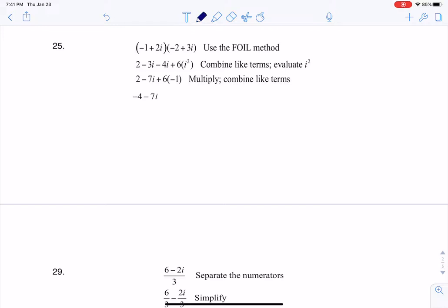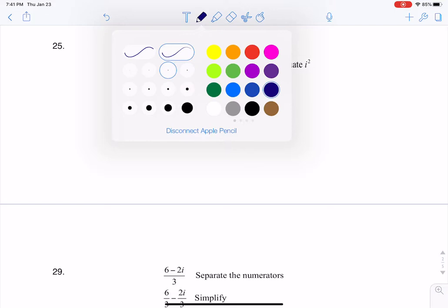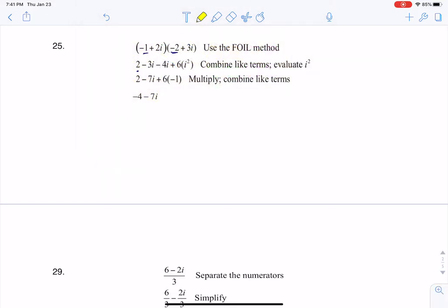All right, so if I want to do first, it's going to be negative 1 times negative 2, and that's where this positive 2 comes from. And if I want to do outer, that'll be negative 1 times 3i, and that's where this negative 3i comes from.